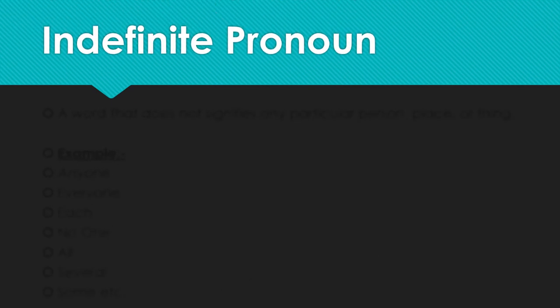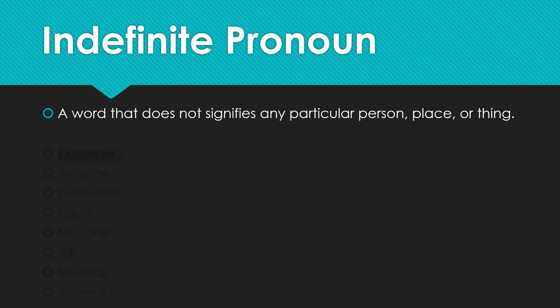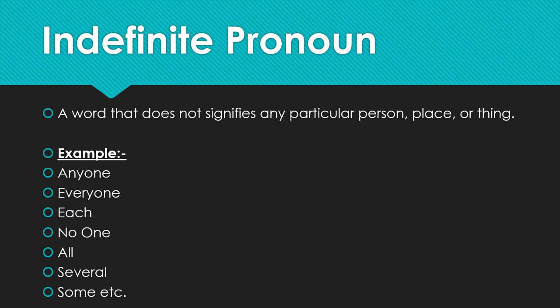Indefinite pronoun — the name itself says what is not definite. A word that does not signify any particular place, person, or thing. Examples: anyone, everyone, each, no one, all, several, some, etc. By using these words, we do not pinpoint on a particular person, place, or thing — we do not signify directly.